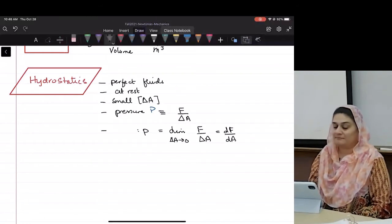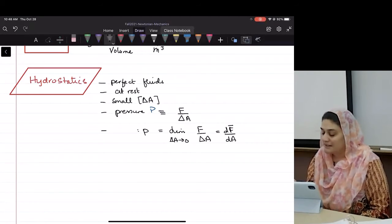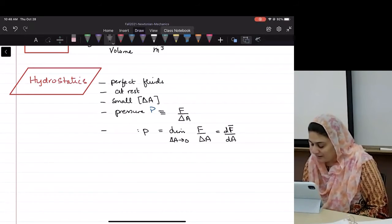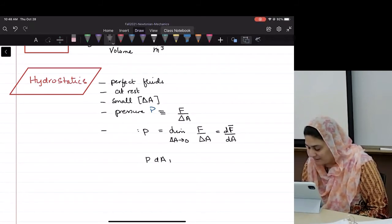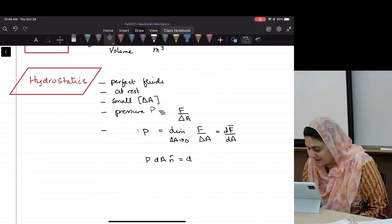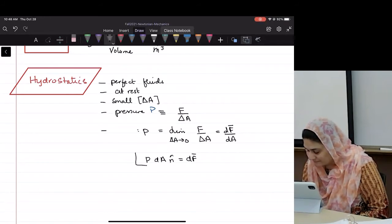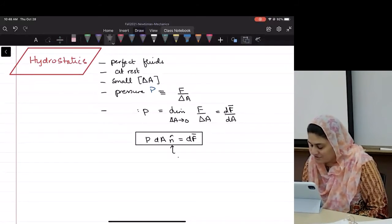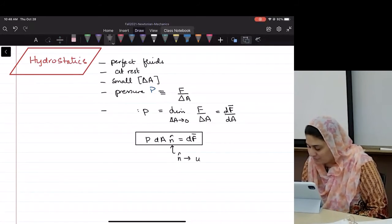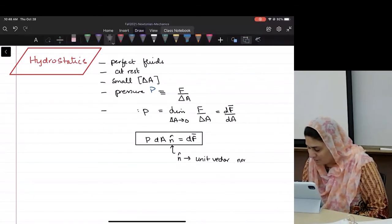Okay, now may I also say small p dA n is dF, where n is a unit vector normal to the surface?